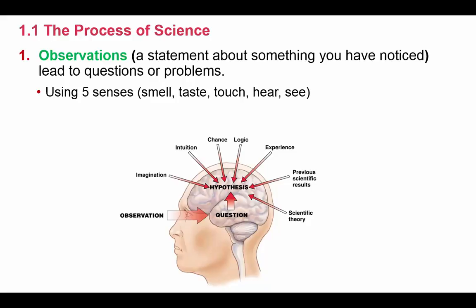Step one is making observations. By definition, an observation is just a statement about something that you've noticed. Another textbook defined observation as gathering info. When we gather this info, we're going to use any of our five senses — something that we smell, taste, touch, hear, or see. Based on this observation, it leads us to questions or problems, and from there we form our hypothesis.